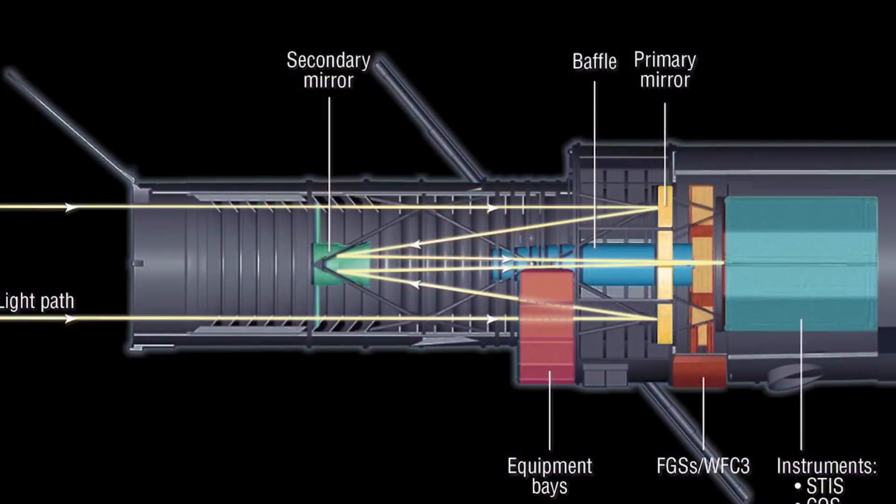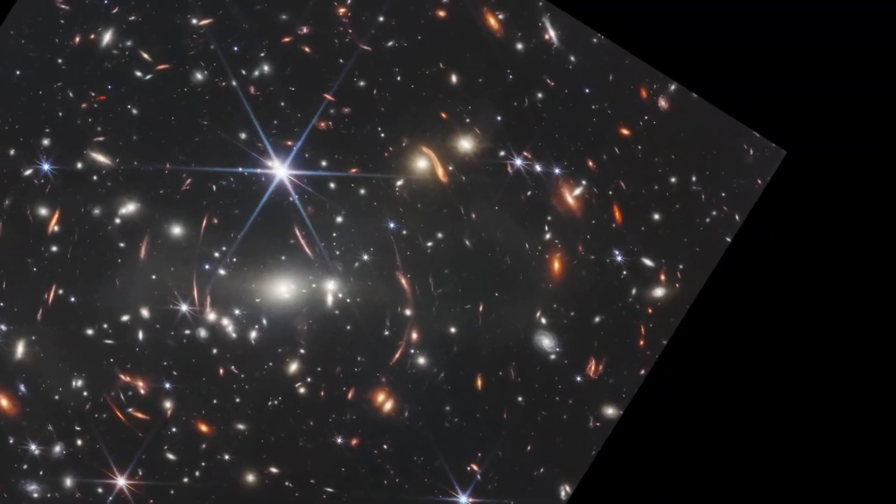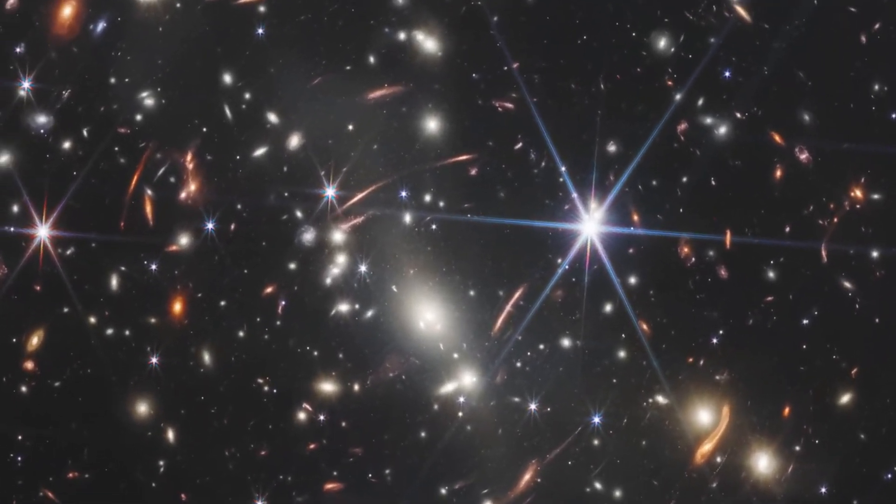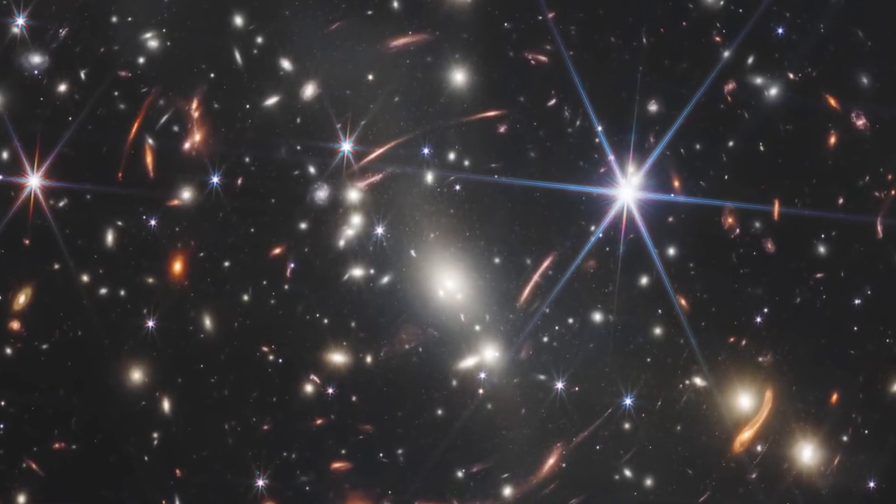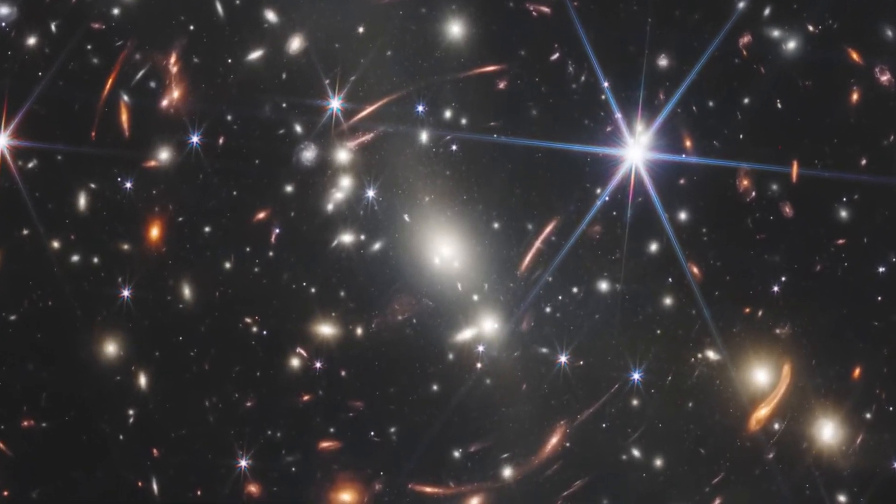Hubble's mirror is 2.4 meters wide, which is 7.9 feet wide, whereas Webb's segmented honeycomb-shaped mirror is an enormous 6.5 meters across, which is 21.3 feet across.